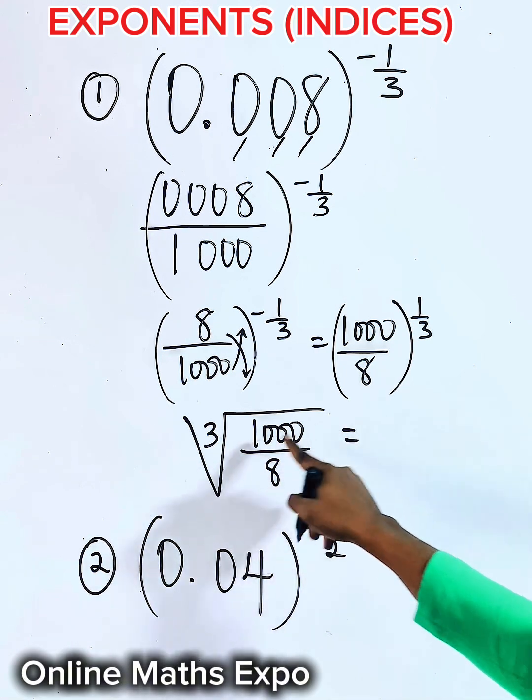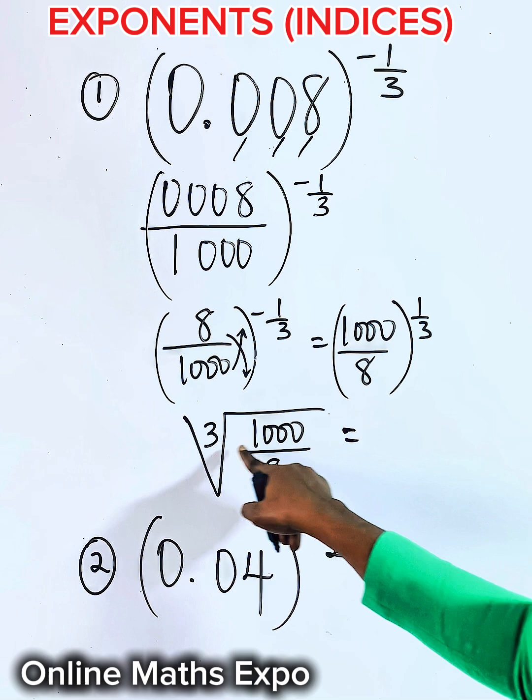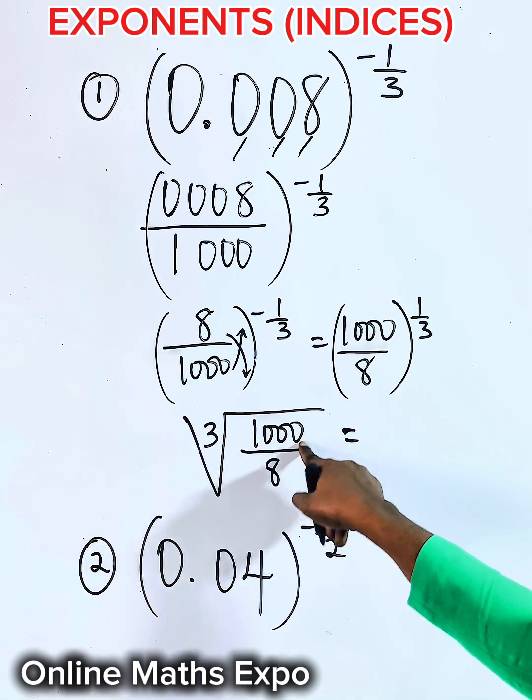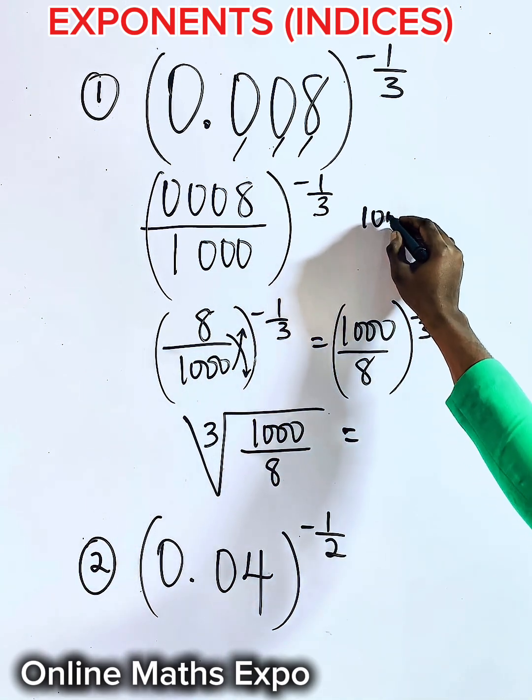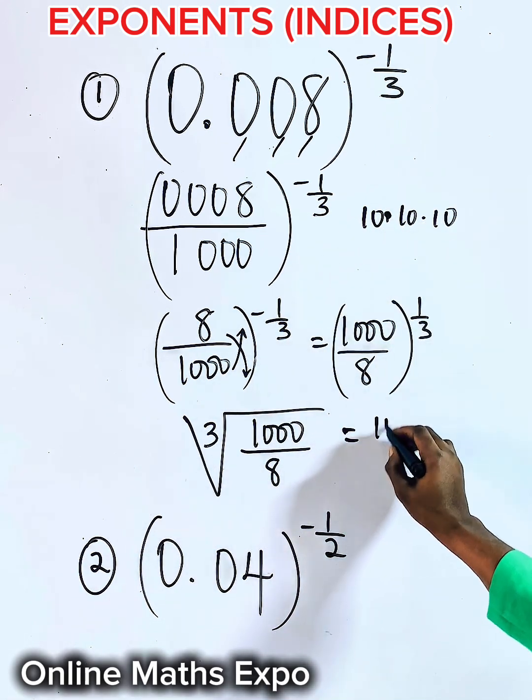So we are going to now have, this means what number will be the same number you multiply 3 times to give you 1,000. You know it's 10 multiplied 3 times gives you 1,000. So we have 10.